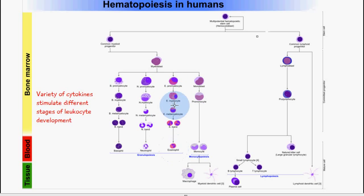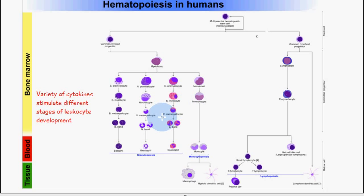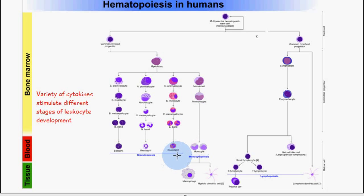If we want to produce an eosinophil, from the myeloblast it forms the eosinophilic promyelocyte, eosinophilic myelocyte, eosinophilic metamyelocyte, then the eosinophilic band, and finally the eosinophil. This process is called granulopoiesis, because it is just for the granular leukocytes.